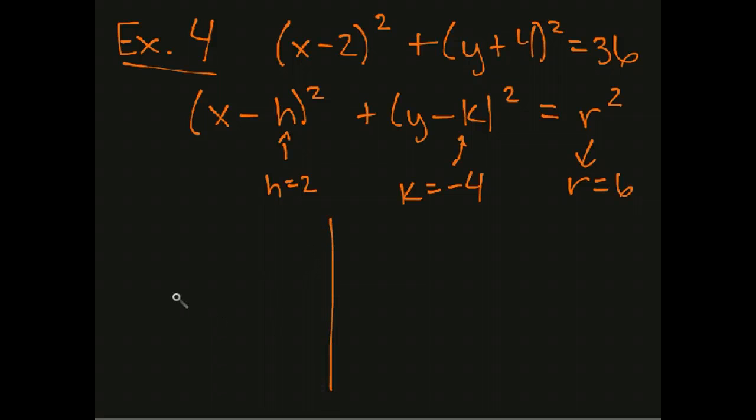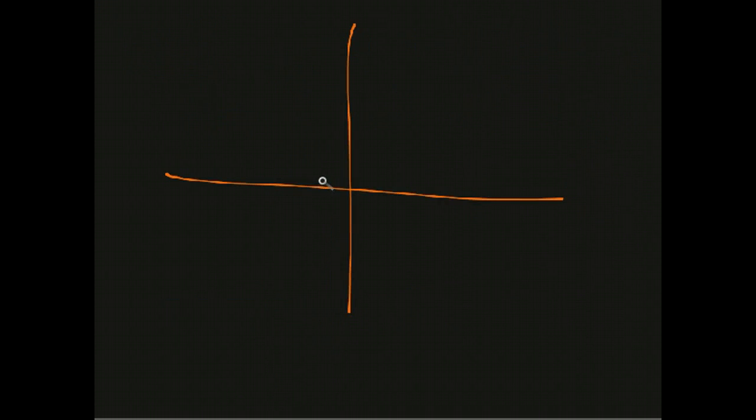So that means that we put our center at an x value of 2, a y value of -4. Oops, I didn't do a very good job with this graph. Let's go on to another page. I went on to another page because I didn't really give myself enough room there. So, oops, it was supposed to be positive 2. Positive 2 and 1, 2, 3, 4, -4. That is still -2. But there's our center.